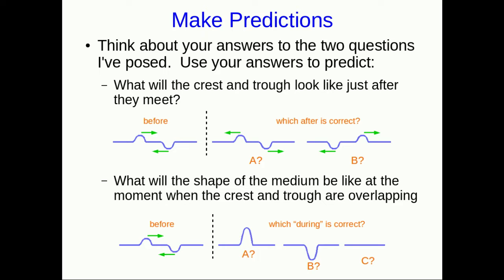At the end of part one, I asked you to make these two predictions about what happens when a crest and a trough meet on the wave machine. Do they pass through each other or bounce off of each other, and what do they look like in the middle when they're overlapping the most? So now let's look at the wave machine and see what actually happens.